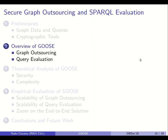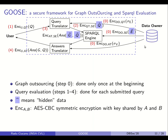Now I'll discuss the overview of GOOS. The global workflow has one step — graph outsourcing — done only once at the beginning, and then four steps for query evaluation done for each query. Each time you see a hat with a blue background, this is what we call hidden data — anonymization of the query, graph, or answers so no cloud node learns what data it manipulates. The notation ENC with A and B as subscripts means encryption using AES-CBC with the key shared between those two participants. Since there are seven arrows in the figure, there are seven shared keys.